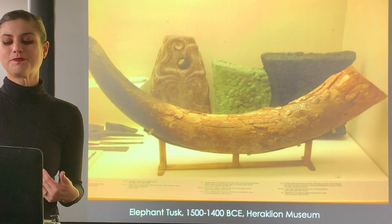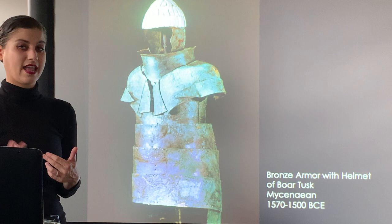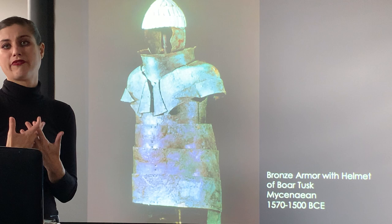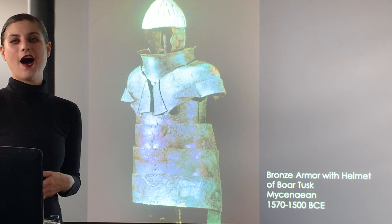More elephant tusks are on display, and here is a boar's tusk helmet. By the time of the ancient Aegean, we're starting to see more metal smithing - bronze armor for the body with boar tusk helmets for skull protection - reflecting the Bronze Age's advancing technology.